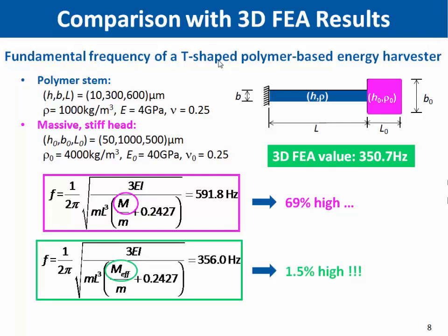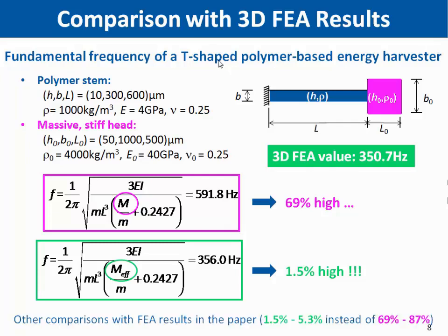However, when we replace M by the effective mass, we obtain a very good approximation of the fundamental frequency of this resonator: 356 Hz, which is only 1.5% too high. We also ran this comparison on different cantilever geometries and found that the errors of the model, including this end mass effect, are significantly reduced.